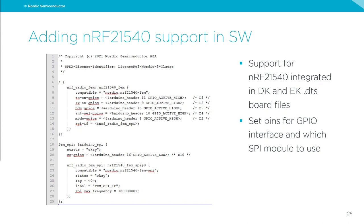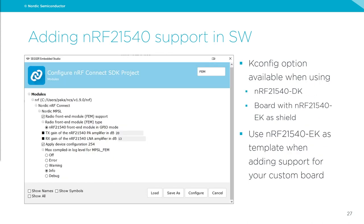In release 1.9 we added support for the 5340 running with generic front-end modules. Once DTS files are included, this is the Kconfig settings view in SEGGER Embedded Studio — a similar view is available in VS Code. By default, we have added radio front-end module FEM support with the 21540 in GPIO mode settings, and this comes in automatically when you pick the 21540 DK as the build target. Using the EK as a shield looks quite similar.